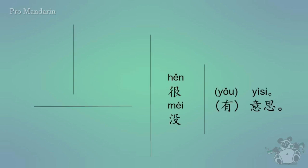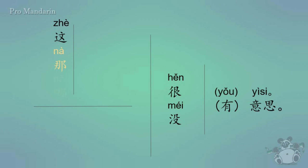Moving forward, we're going to add in another couple of columns. In the upper left column, we'll have zhè. Depending on what it's paired up with, that can mean 'this', 'these', or 'here'. In today's lesson, we're going to pair it up with nouns and their appropriate classifiers in order to mean 'this'. Then the next character, nà, can mean 'that', 'those', or 'there', but in today's lesson we'll be using it as 'that'. And lastly, nǎ means 'which', as in a question. I'll give you some examples shortly on how to use nǎ.